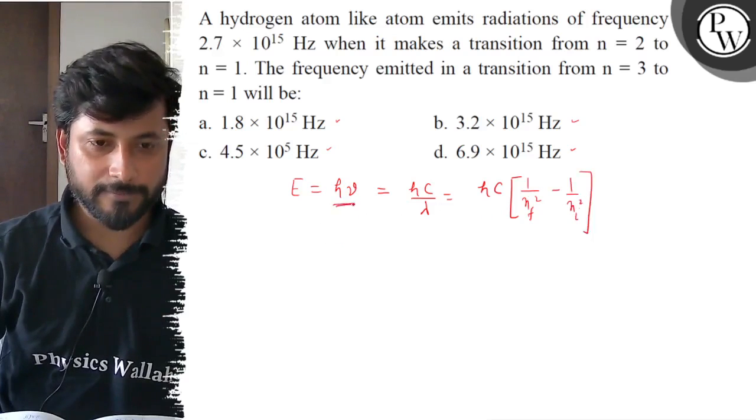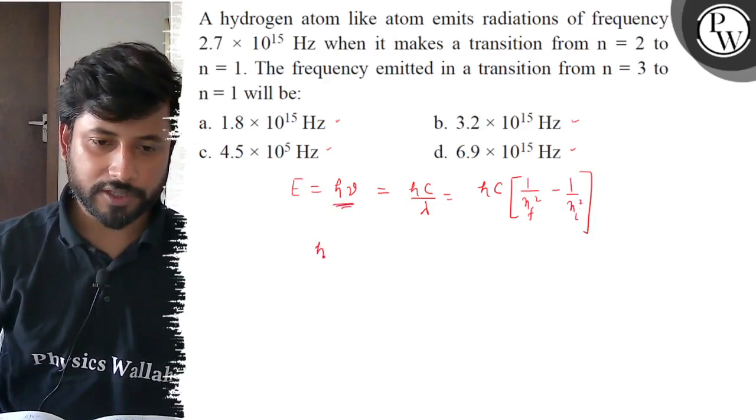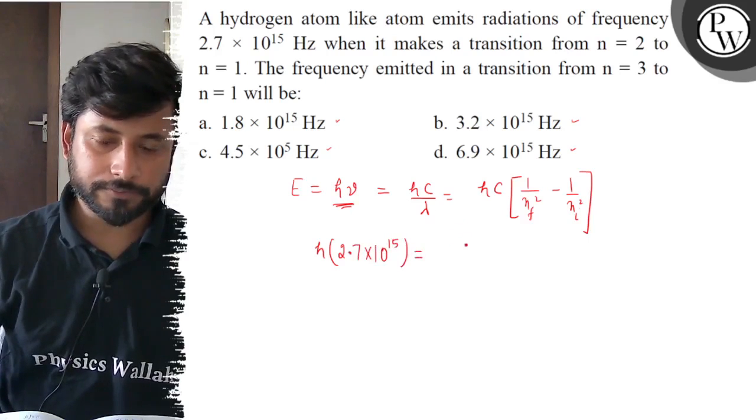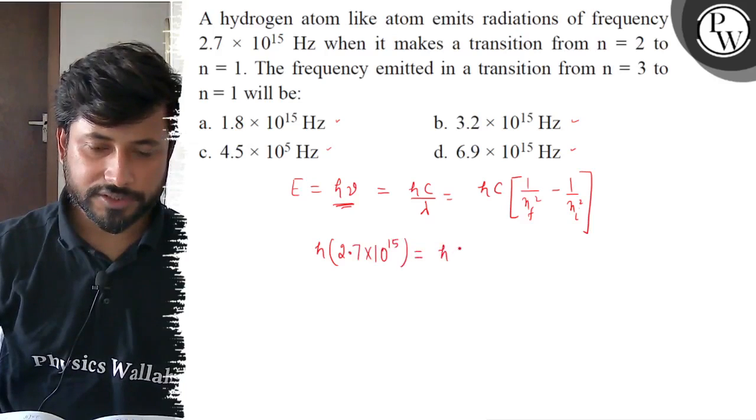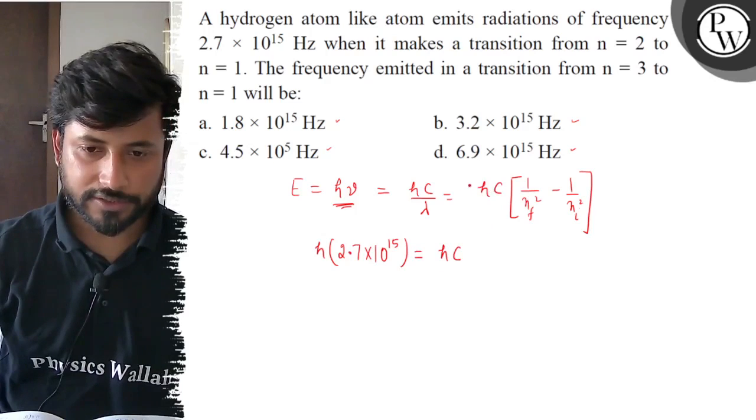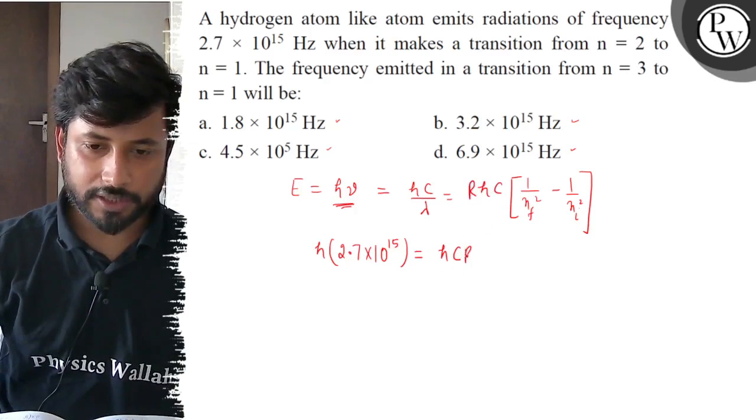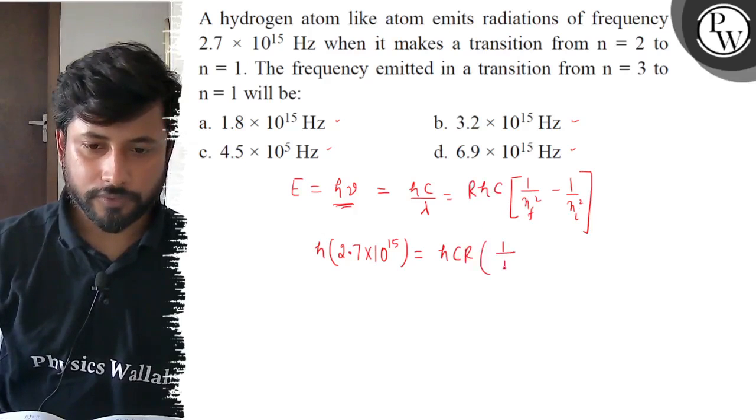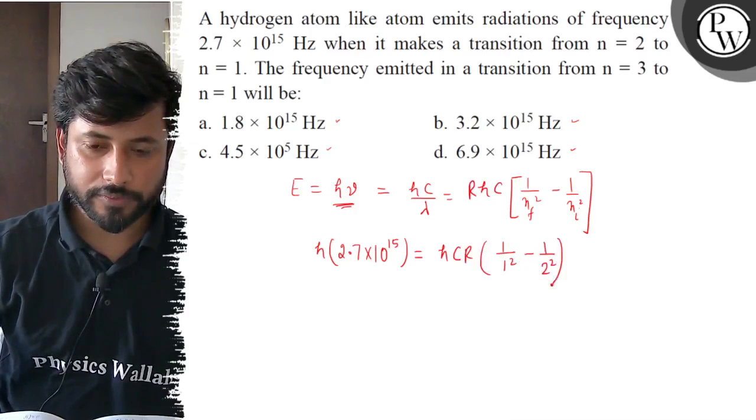What is the frequency? 2.7. H into 2.7 into 10 to the power 15 equals to Hc times R times 1 by 1 square minus 1 by 2 square.